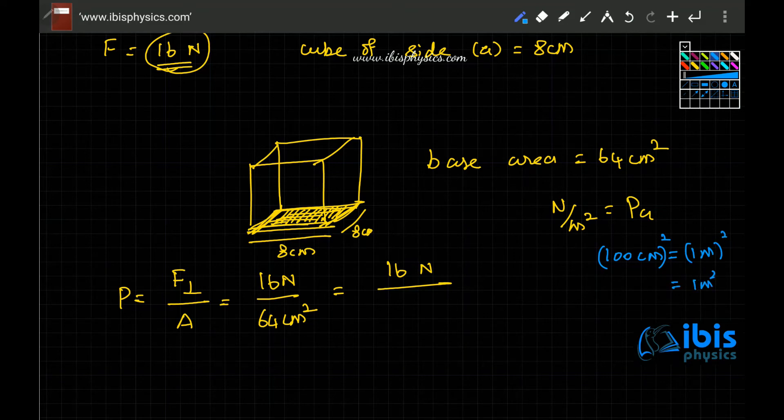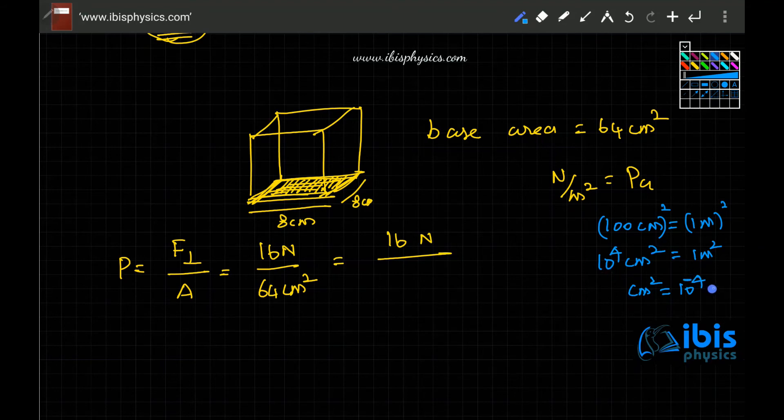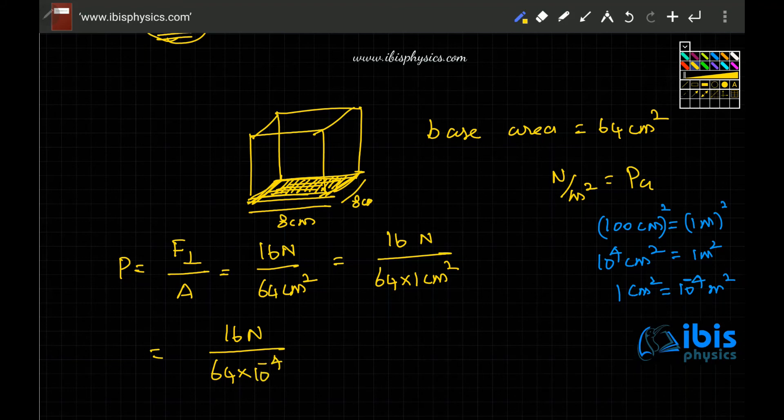So now this 1 centimeter square is what you want. So 1 centimeter square is equal to 10 power minus 4 meter square. So this way, 64 centimeter square is 64 times 1 centimeter square. So it is 16 Newton by 64 into 10 power minus 4 meter square.